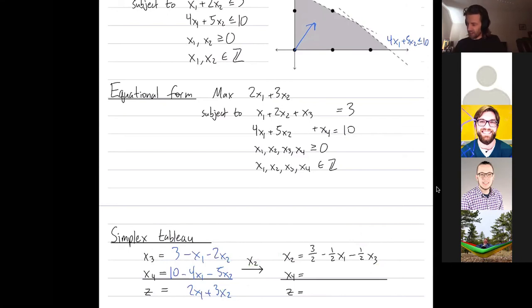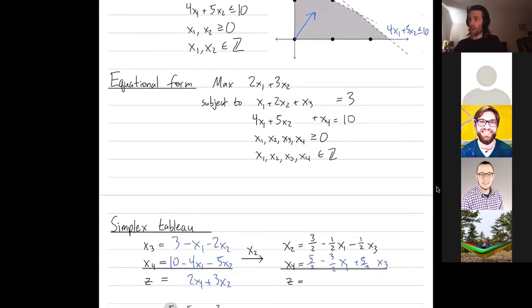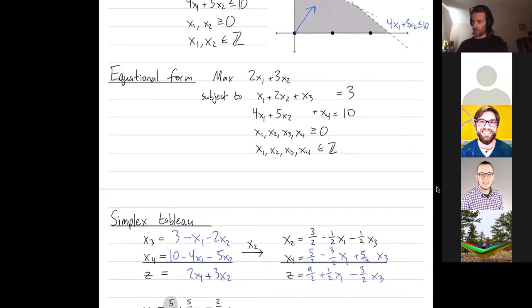So in this first equation, I solve for x2 as such. And then I plug in that formula for x2 into my equations for x4 and into my function that I'm optimizing. And then we just do the algebra. It took me a lot of attempts to get it right because there's a lot of fractions.